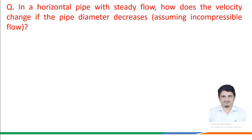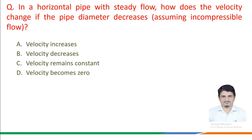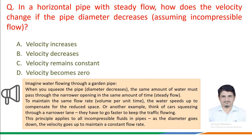In the next question, we are assuming an incompressible flow in a horizontal pipe with steady flow — how does the velocity change if the pipe diameter decreases? The options given are: A. Velocity increases, B. Velocity decreases, C. Velocity remains constant, D. Velocity becomes zero. Points to consider: imagine water flowing through a garden pipe. When you squeeze the pipe, the diameter decreases, and the same amount of water must pass through the narrower opening in the same amount of time.